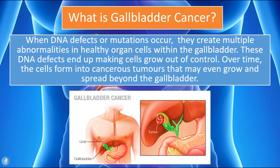If we take a closer look at this image at the bottom of the screen, the gallbladder is located just beneath the liver. When DNA defects or mutations occur within the cells that make up the gallbladder, they can form cancerous cells. When one cancerous cell forms, it starts growing more rapidly and out of control — this is what causes the tumor to form. It begins with one cell that has a DNA defect or mutation, and the more the cell divides and multiplies, the larger the tumor gets. That is how gallbladder cancer is formed.